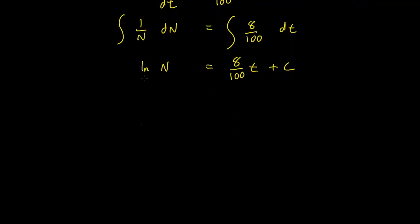To eliminate the log, we take the exponentials of both sides. e to the ln N equals e to the 8 over 100 T plus C. This gives us N on the left hand side and e to the 8 over 100 T times e to the C on the right hand side.